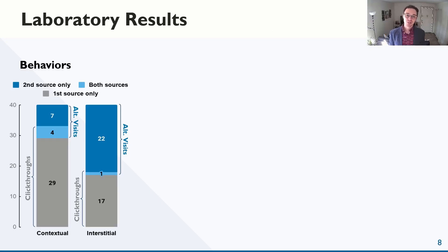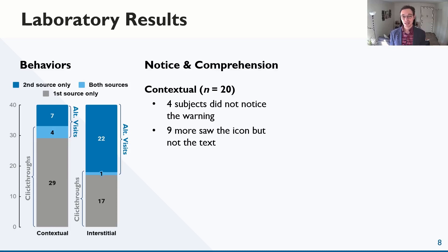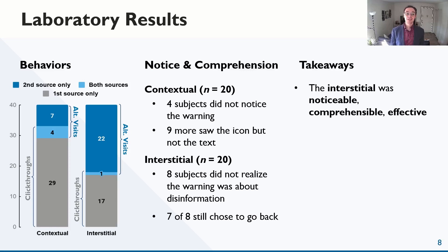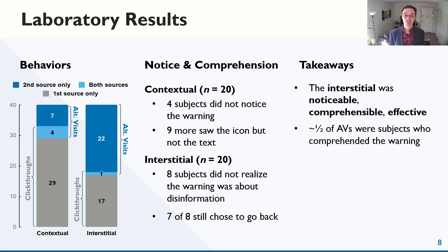In terms of behavior, more subjects clicked through the contextual than the interstitial — 33 compared to 18. For the contextual, notice and comprehension were middling. Four subjects didn't notice the warnings at all, and nine more saw the icon but not the message, meaning they didn't know what the warning was about. For the interstitial, eight subjects didn't recognize that the warning was about disinformation, although interestingly seven of those still chose to go back and try the secondary source. This tells us that even though the interstitial performed well, the link between comprehension and behavior was tenuous. Only half of the alternative visits came from users who understood that the warning was about disinformation.